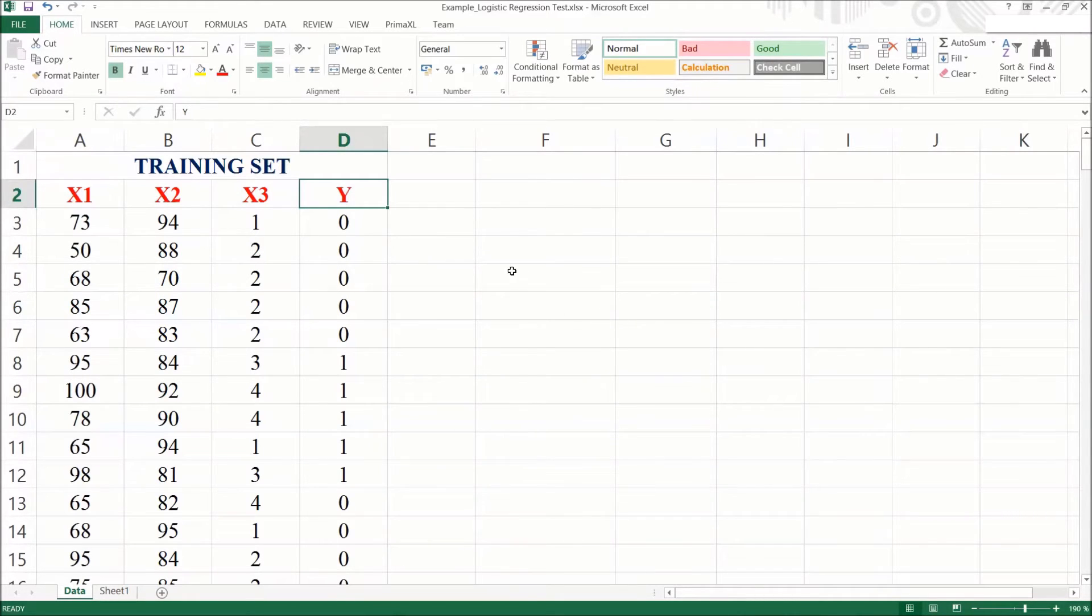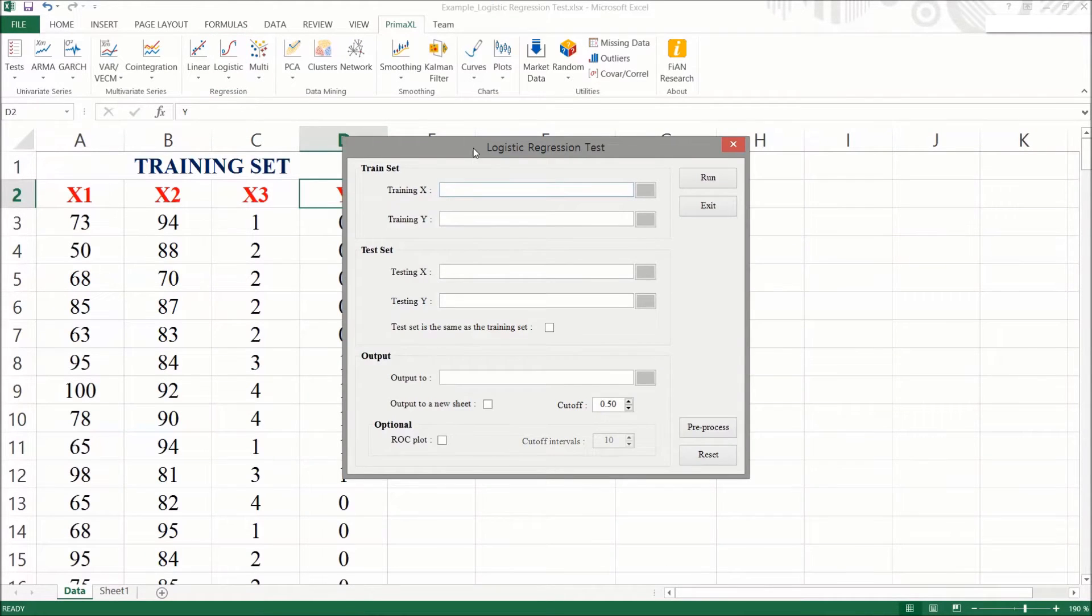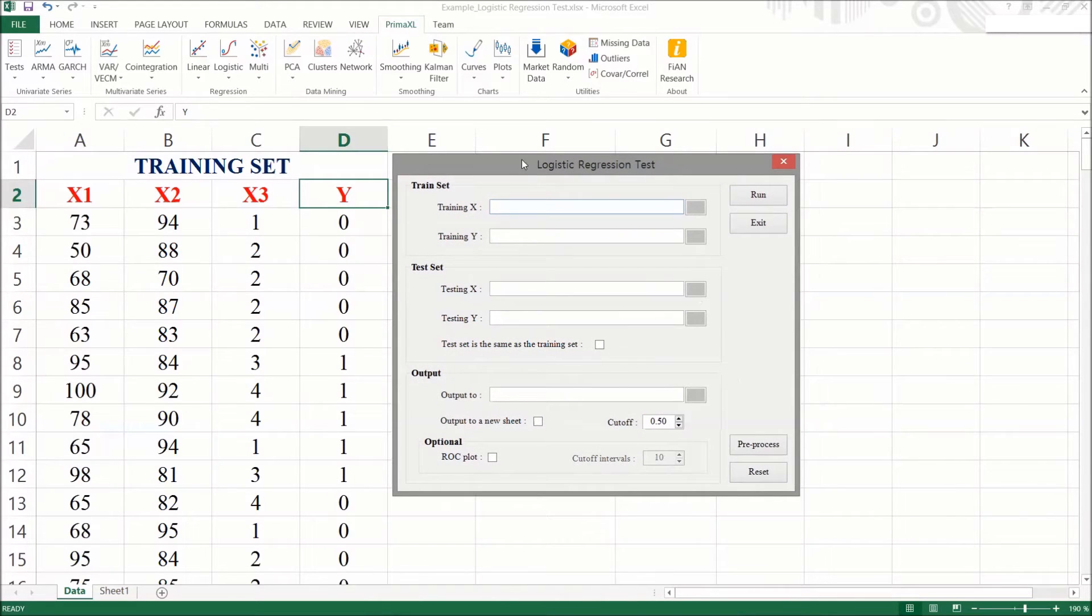Now, let's do the test using PrimaExcel. We go to the PrimaExcel tab, click on it to bring up its ribbon menu. Then, we click on the arrow under the button named logistic, and then select test. A menu form appears. This menu form is quite similar to the ones we had seen so far. At the top,